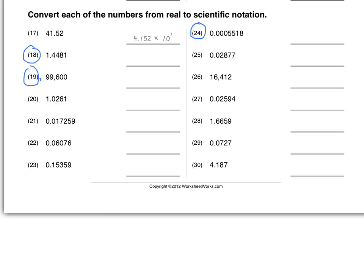So let's do some for practice. Let's do number 24. The decimal point is going to go between the two 5's, so it's going to be 5.518 times 10 to the — 1, 2, 3, 4 — 10 to the negative 4. And if we take a look at number 18, where we're going to put the decimal point, it's going to go where it already is. So we're going to have 1.4481, and now we can multiply times 10 to the 0 power, because we don't have to move the decimal — it's already in the correct place. Again, this times 10 to the 0 is the same as just multiplying by 1. So try these for homework tonight, and we'll go over any ones that you want to go over in class.